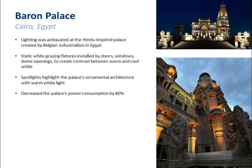At the Baron Palace in Cairo, Egypt, spotlights were used to highlight ornamental architecture. This is a Hindu-inspired palace in Egypt with many unique architectural details. Using multiple applications of grazing lights, wash lights, and spotlights, they created visual interest with a variety of color temperatures, and those spotlights really brought out the ornate detail. The all-LED-based system decreased power consumption at the palace by 80%.